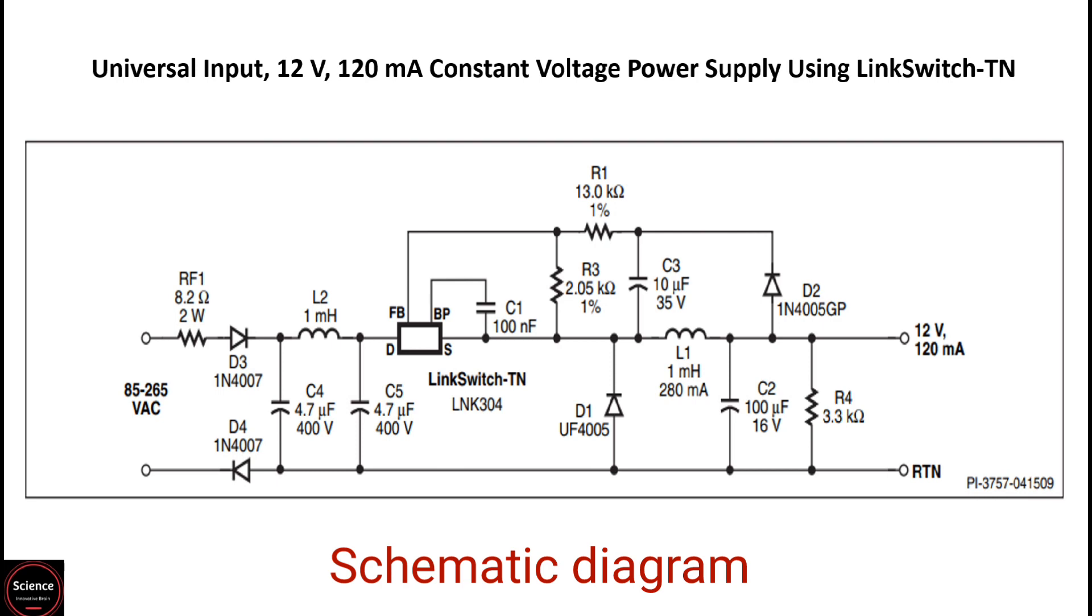C4, C5, and L2 act as a DC filter. LinkSwitch-TN combines a high voltage power MOSFET switch with a power supply controller in one device. Unlike conventional pulse width modulator controllers, it uses a simple on or off control to regulate the output voltage.